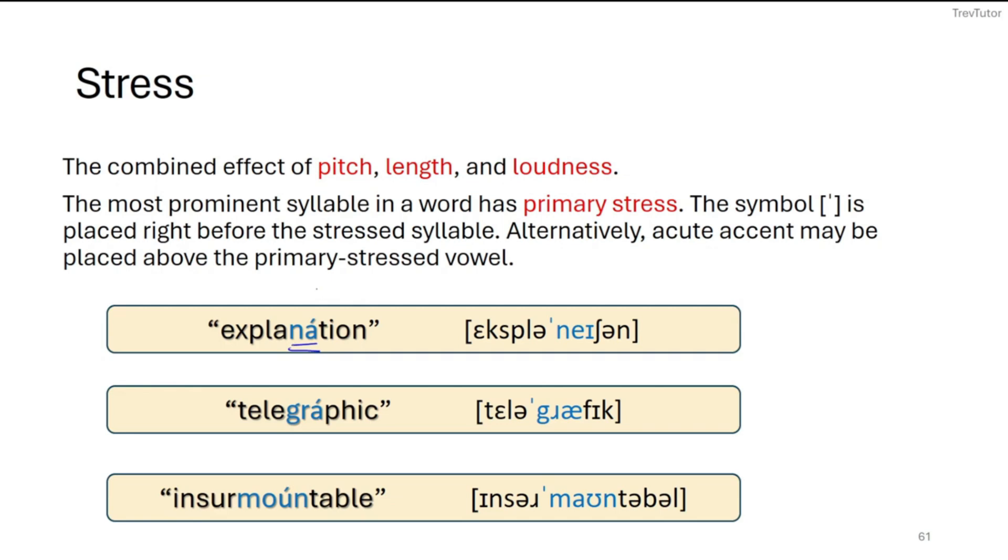Now in regular writing, we can symbolize this with a little accent, an up accent on the vowel. But in our IPA transcription, we usually use this little apostrophe like symbol before the syllable that is stressed. So explanation, ne is stressed. So we put the little apostrophe before it.